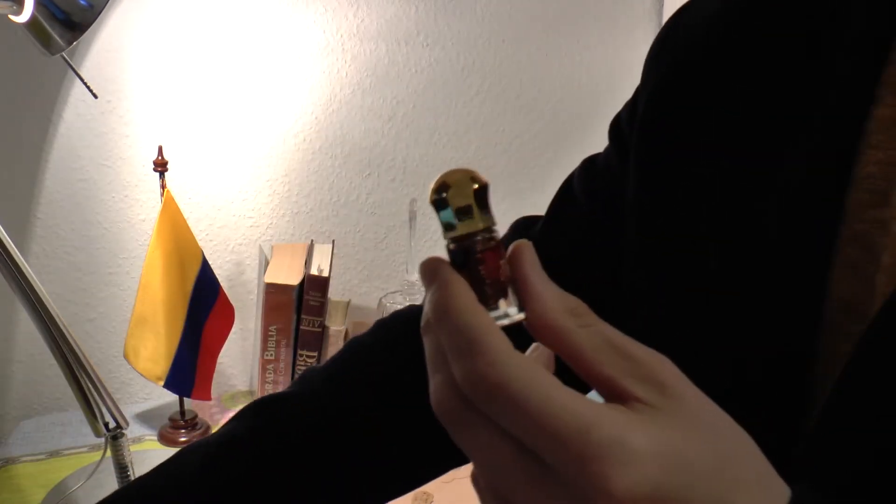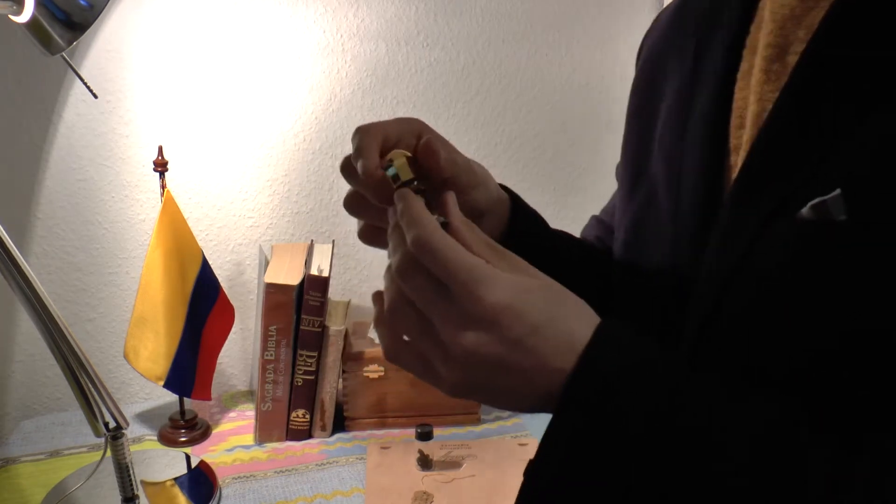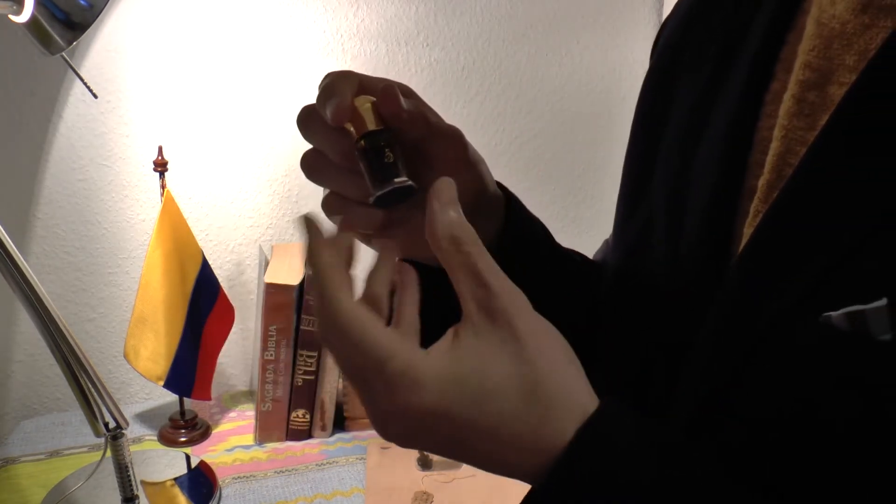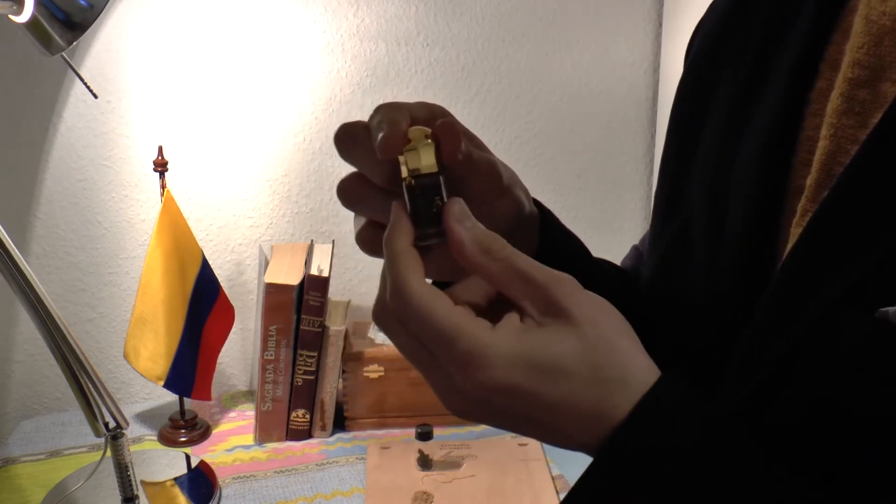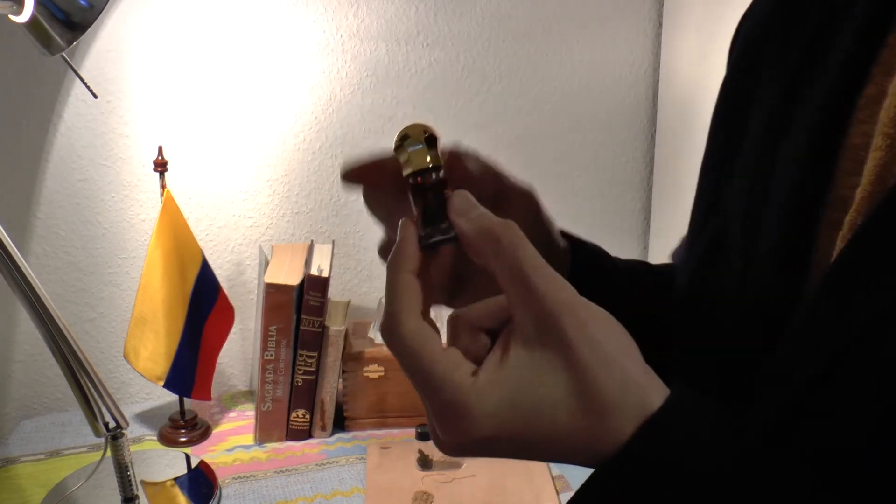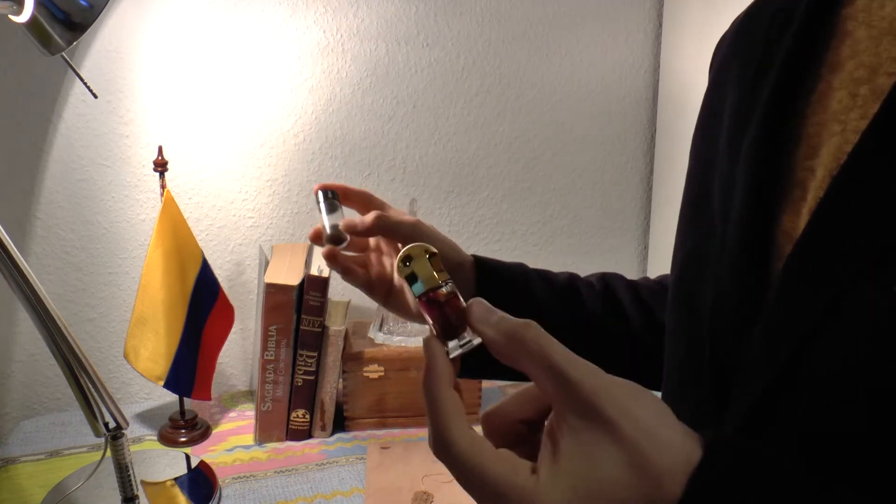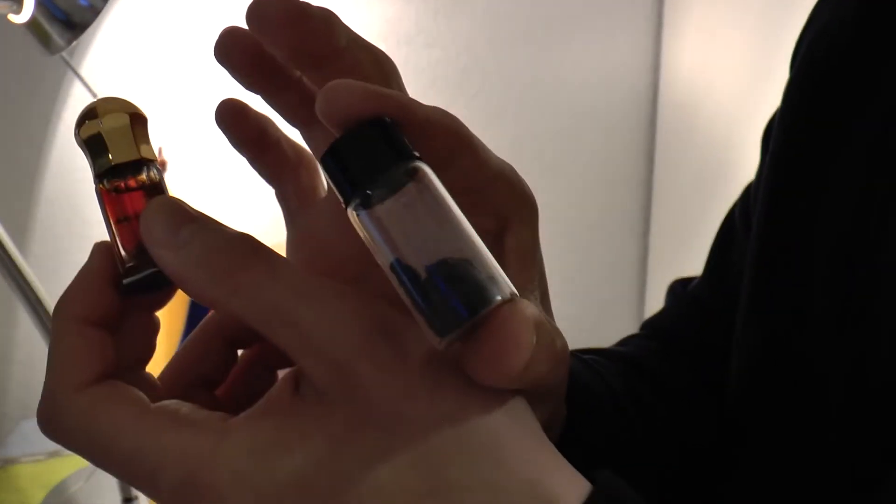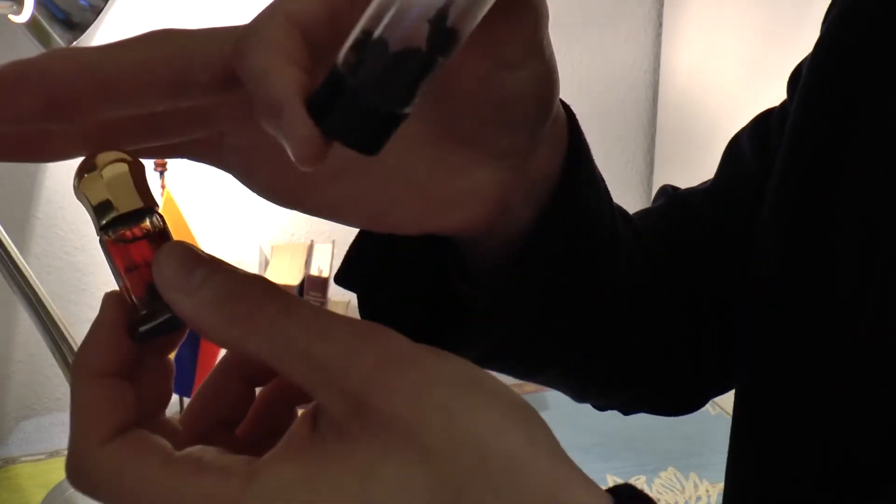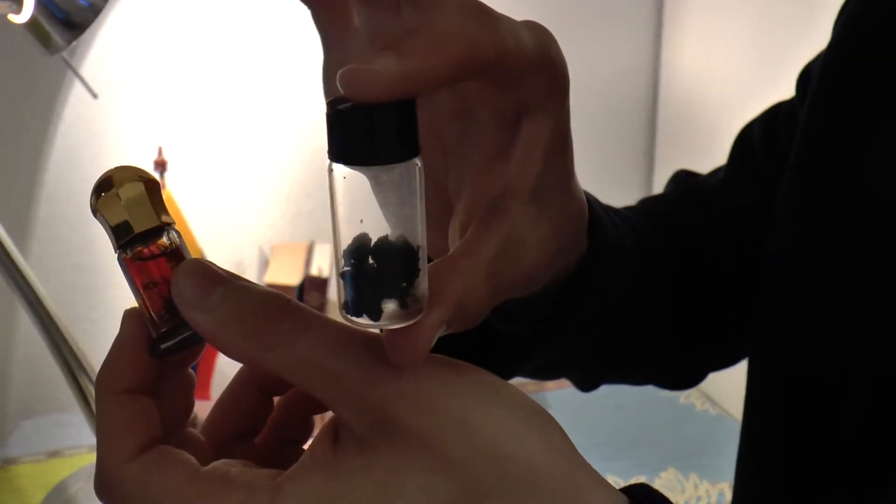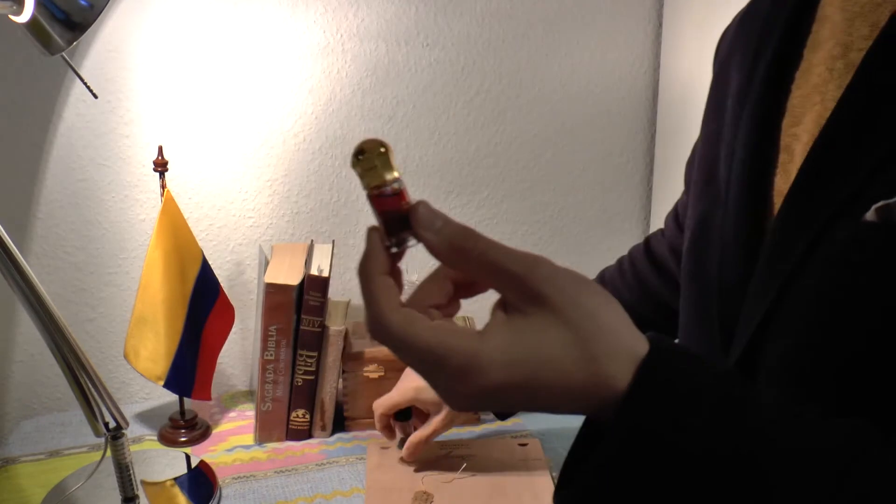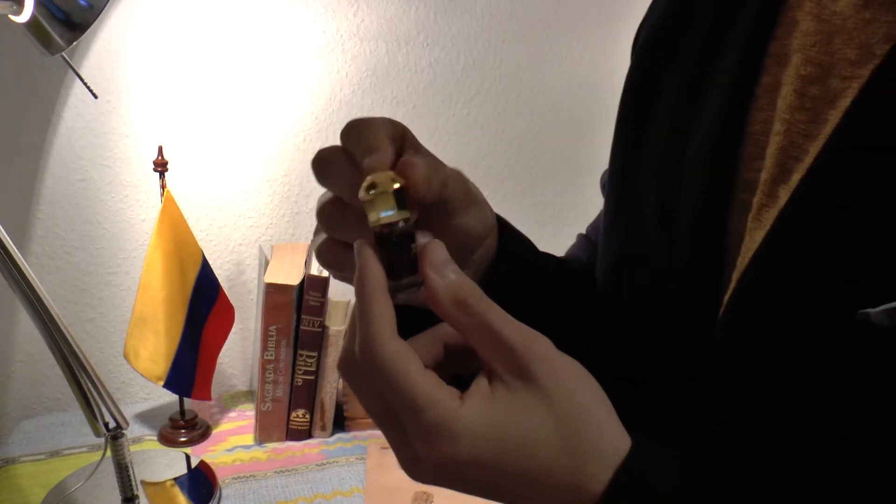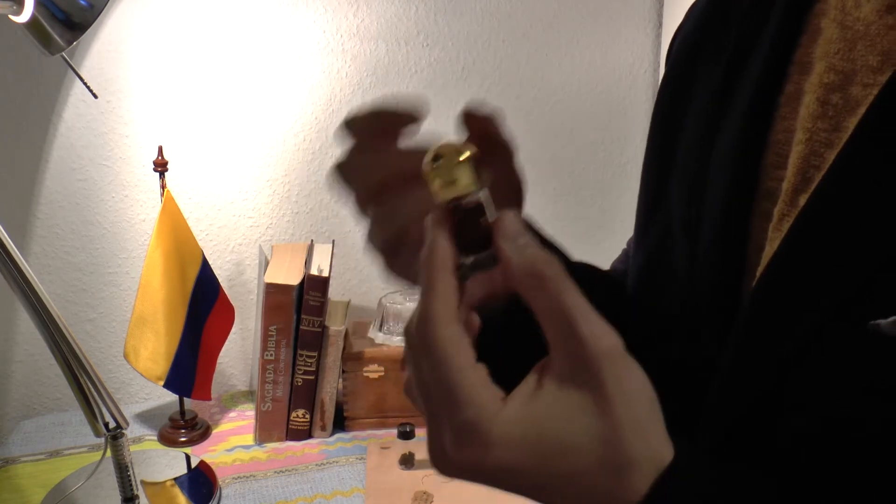And after a while, you get that motor of the musk started. And here, the musk used for this, is actually the Tonkin musk, that you can see right here. Again. Yeah. This is the Tonkin musk, from Vietnam, and it comes alive.